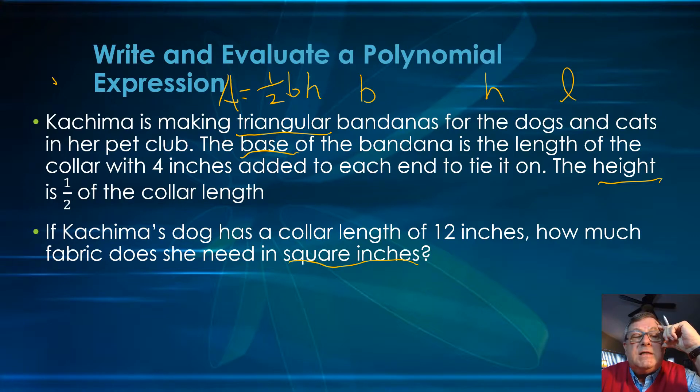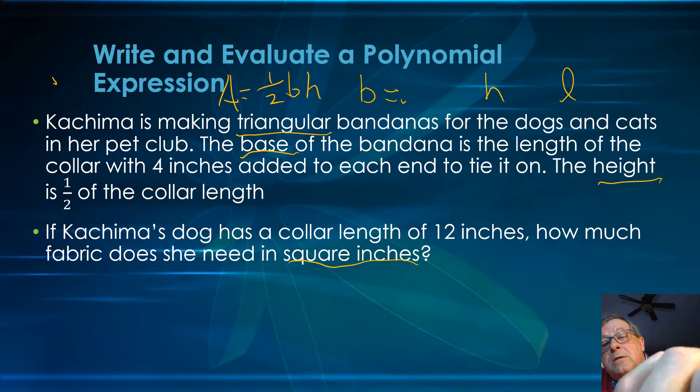What do we see about the base? The base is the length of the collar, L, plus 4 inches added to each end to tie it on. So the base equals the length plus 8 inches, the length being the length of the collar.